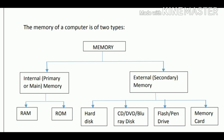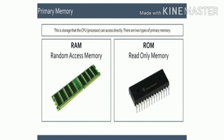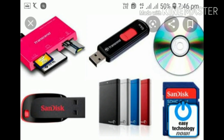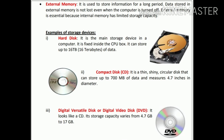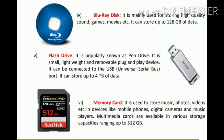External devices like hard disk, CD, DVD, pen drive, and memory card are the external devices. The internal or primary memory — RAM, which is a green long-like device — and read-only memory is a black type of device which is built into our computer system. The external devices are used externally, like the pen drive, hard disk, DVD, CD, and memory card. In this video we will be learning about external devices like hard disk, compact disc, DVD, and also the other three types: Blu-ray devices, pen drive, and memory card. So let's begin with the external memory, also known as secondary memory.